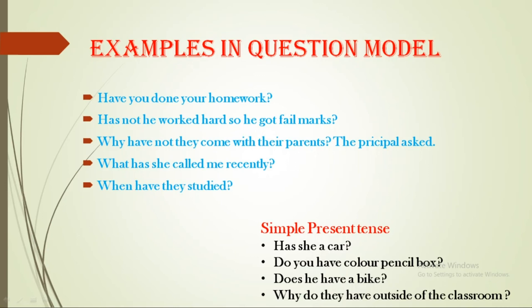For simple present tense SNO type and WHL type: 'Has she a car?' 'Do you have a colour pencil box?' 'Does he have a bike?' Answer — positive: 'Yes, he has a bike.' Negative: 'No, he hasn't a bike.' And: 'When haven't they studied?' 'Why do they have outside of the classroom?' Are you clear?